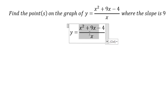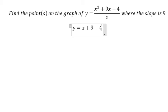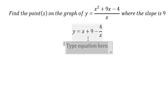x squared divided by x, x divided by x, 4 divided by x, so we get x plus 9 minus 4 over x. Next we need to find the first derivative of the function.